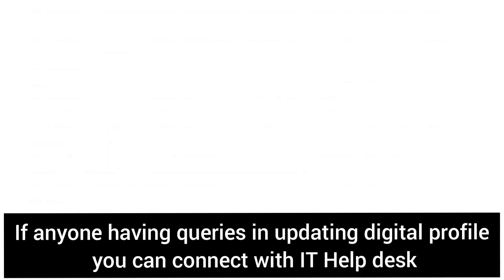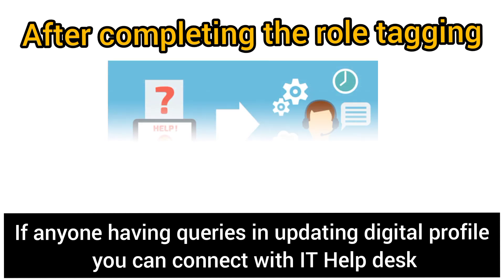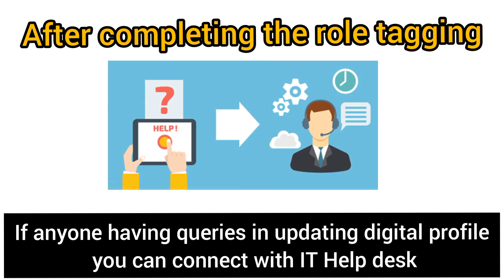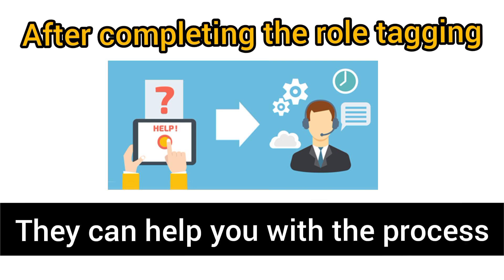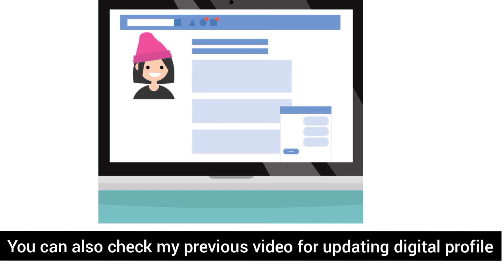If you have a role tagging, you will be able to update your role tagging. But if you have a little confusion in the path and process, you will be able to update your Digital Profile 2.4 and get guidance from your IT support team. I have already updated this — that's the previous path. The new path is the same: skills, role, everything.